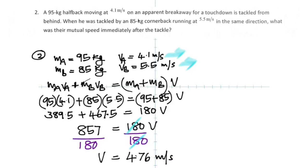That result is acceptable because the common velocity has to be between the velocities of the two, which were 4.1 and 5.5. So 4.76 meters per second is an acceptable result.